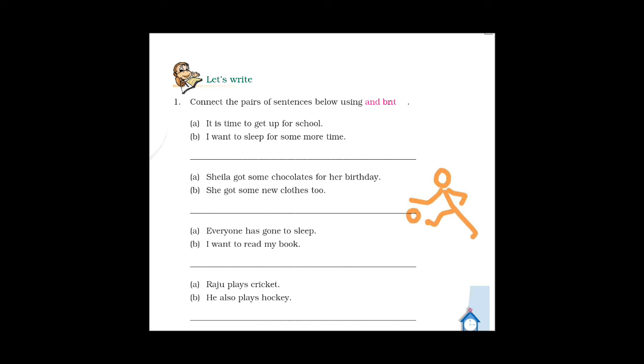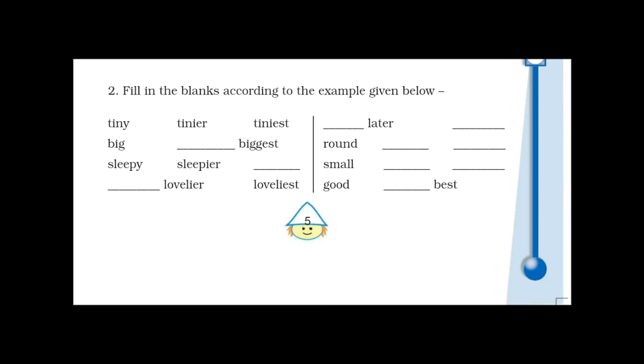Let's see. Raju plays cricket. He also plays hockey. How to connect these sentences? Yeah, exactly, with 'and'. Raju plays cricket and he also plays hockey. Now let's see what is next.